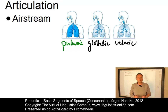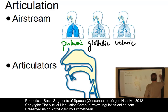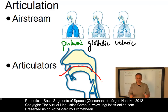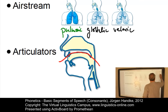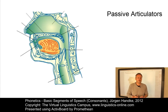To understand the main articulatory parameters, we have to deal with some anatomical details about the vocal tract first. Consonants can be articulated at any point along the upper surface of the oral cavity. The point of this upper surface involved in the articulation of the consonant is referred to as the passive articulator. A passive articulator is a position in the vocal tract which is involved in the production of speech sounds but does not move.